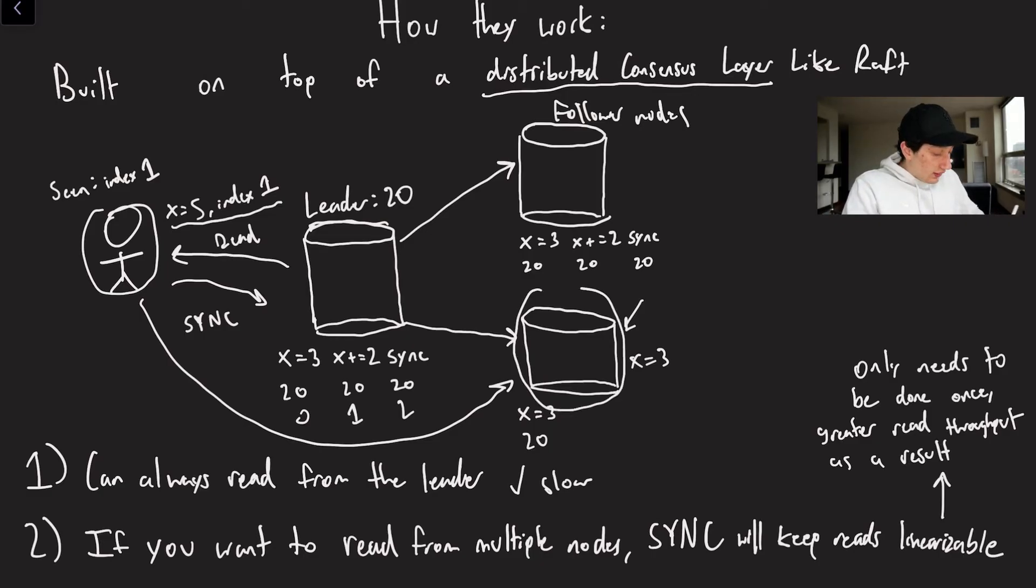So what the client would then go ahead and do is they say, okay, well, I want to read from this guy, but I'm afraid that the data there is stale and my read is not going to be linearizable. So I'm going to write a keyword sync into the log. And you can see that goes over here at index two. And so sync is now going to get propagated to these nodes.